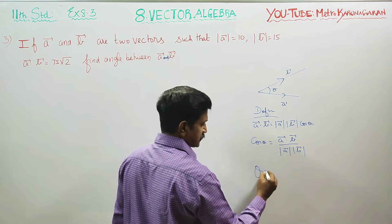We have a ready-made formula. What is the formula? Theta equals cos inverse of A vector dot B vector divided by magnitude of A vector times magnitude of B vector. Therefore,